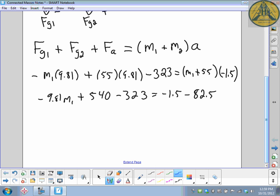Careful with the math. Going to simplify things a little bit: negative 9.81 m1 plus 540 minus 323 equals negative 1.5 m1 minus 82.5. A very common mistake is to forget that each expression in the bracket multiplies the negative 1.5, not just the first one or just the second one. I'll collect some like terms. This would be negative 9.81 m1 added to 217 equals negative 1.5 m1 minus 82.5.